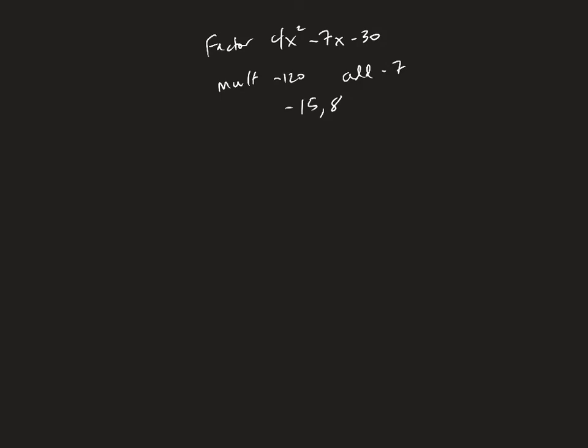That's the same steps no matter what method you're using: grouping, box, or magic. You always have to multiply A times C, find two numbers that multiply to give you that and add to give you the B. Now, the magic method, here's how this works.